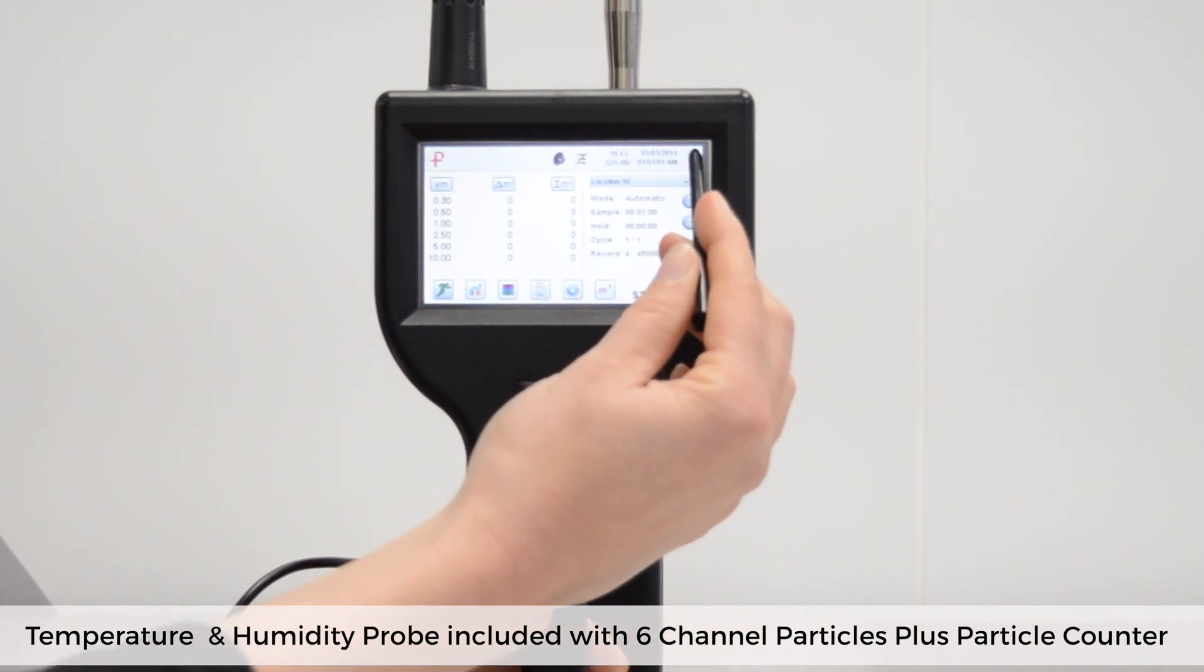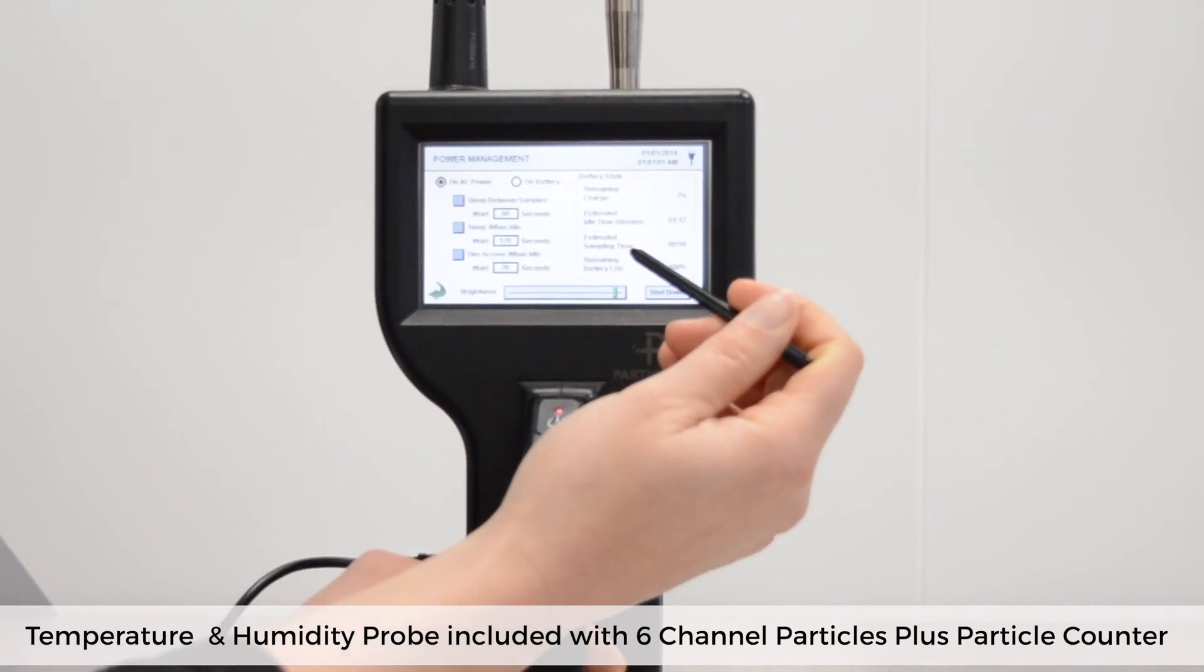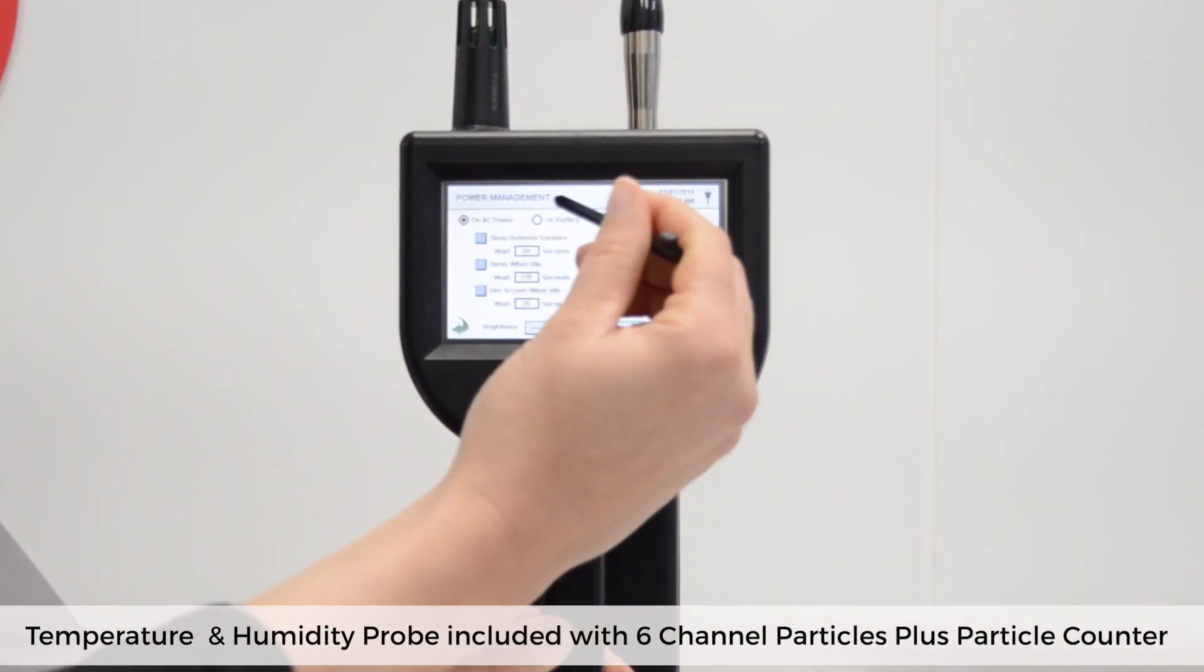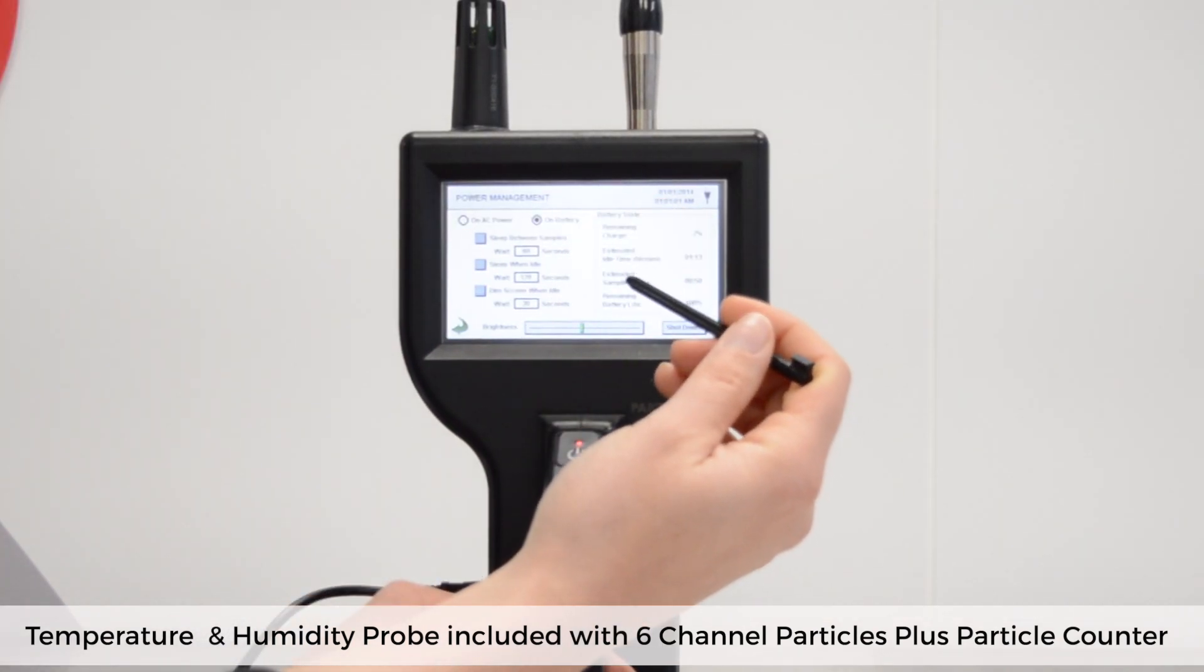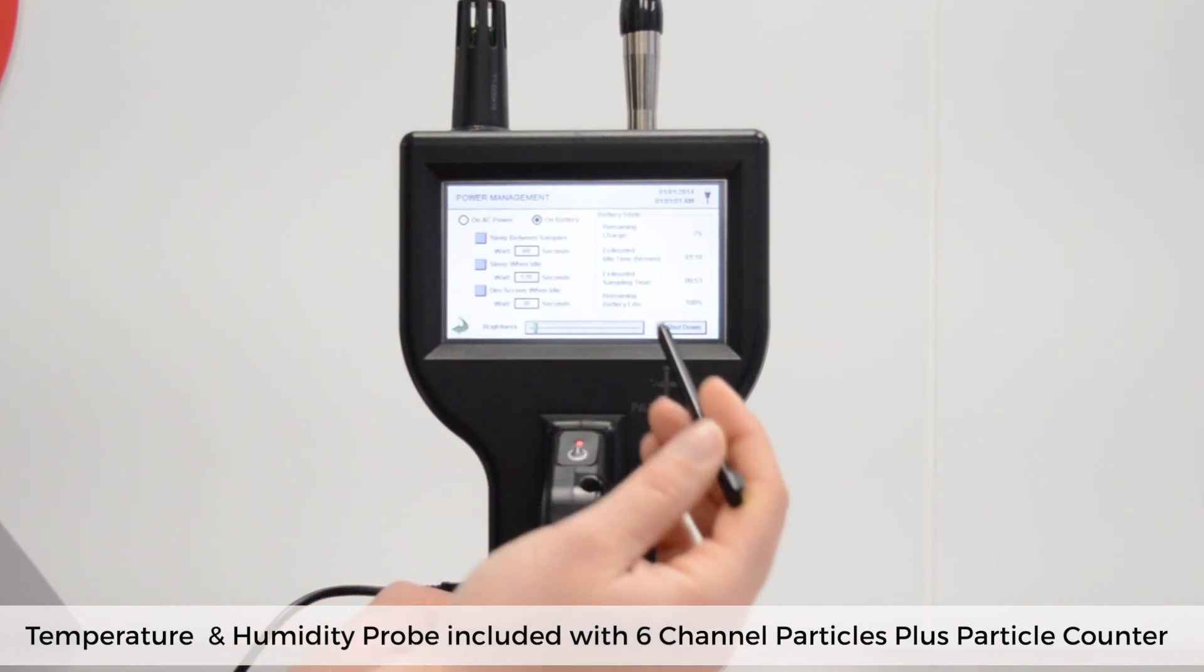If you click on the power icon you are taken to the power management screen. Select on battery to vary the setup options when the unit is powered by the battery. If you set the brightness level to low, the battery life extends.